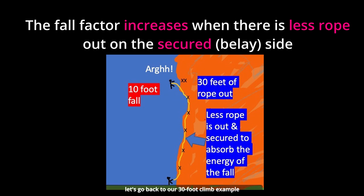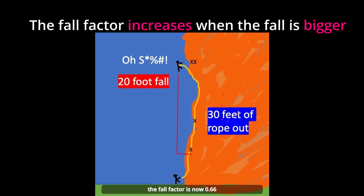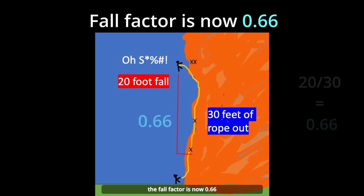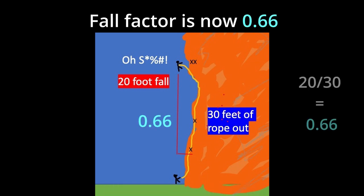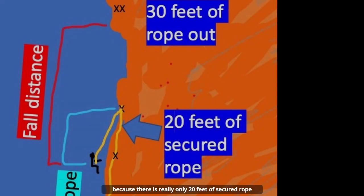Let's go back to our 30-foot climb example. If 30 feet of rope is out and you fall 20 feet, the fall factor is now 0.66, because there is really only 20 feet of secured rope catching the fall.